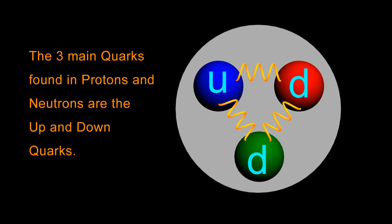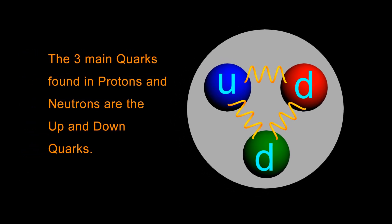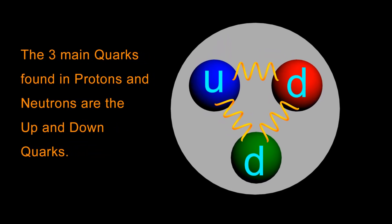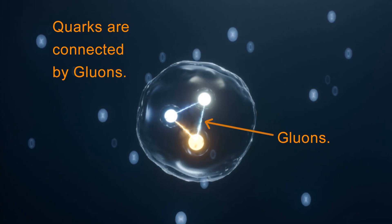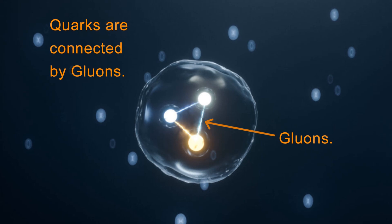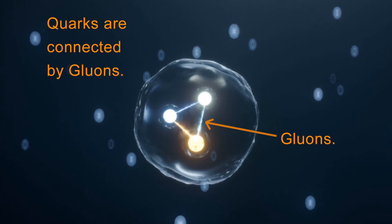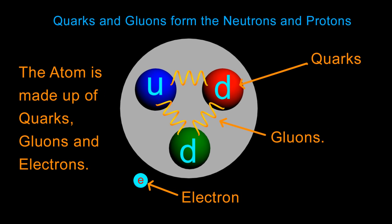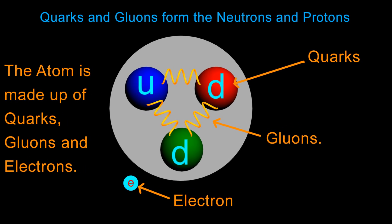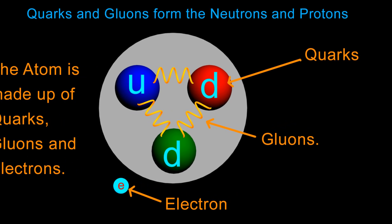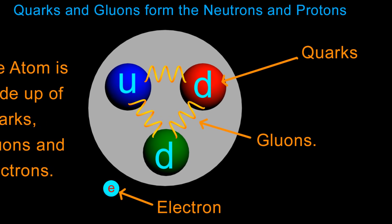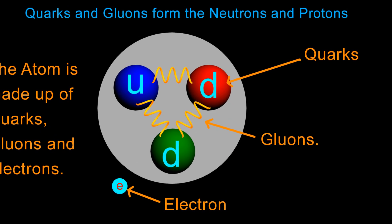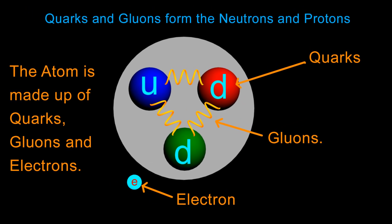According to the standard model of physics, there are numerous types of quarks, but protons and neutrons are made up of three main quarks called up and down quarks. These quarks form a triangular bond of energy and are held together by strands called gluons. Gluons are the force carriers. In essence, according to science, the entire universe is made up of electrons, which are negatively charged point particles, and these triangular bonds of energy called protons and neutrons, which in turn are made up of quarks and gluons.